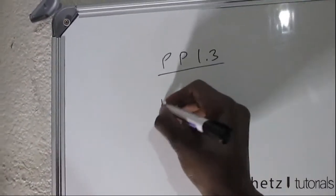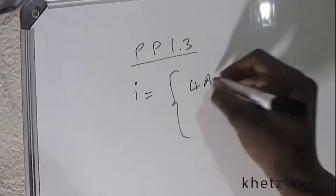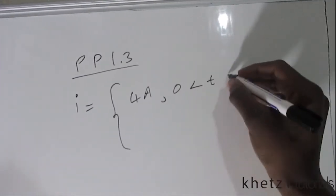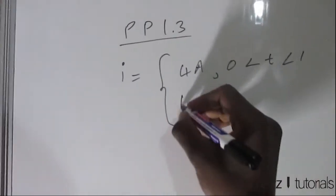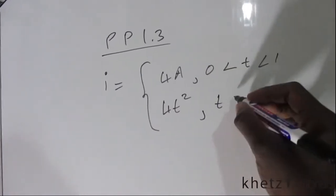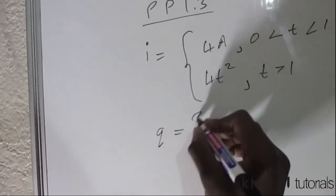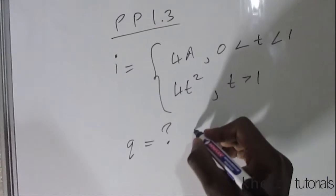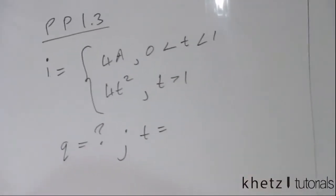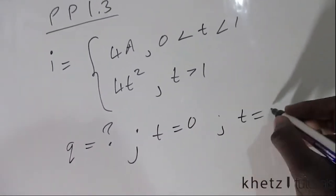Given this current as a piecewise function of 4A between times 0 and 1, and 4t squared for time greater than 1, we are asked to find the charge at the terminals from time equals 0 seconds to time equals 2 seconds.